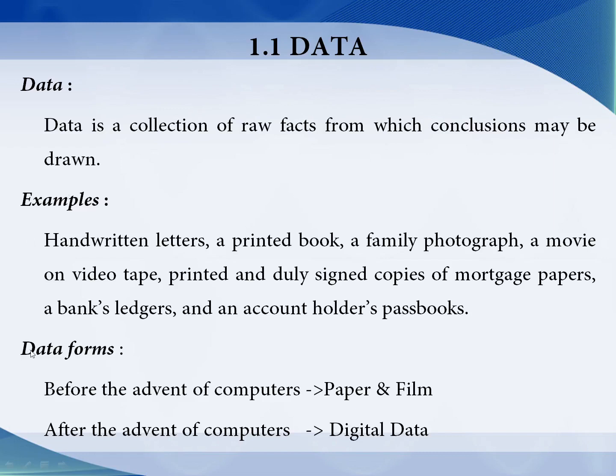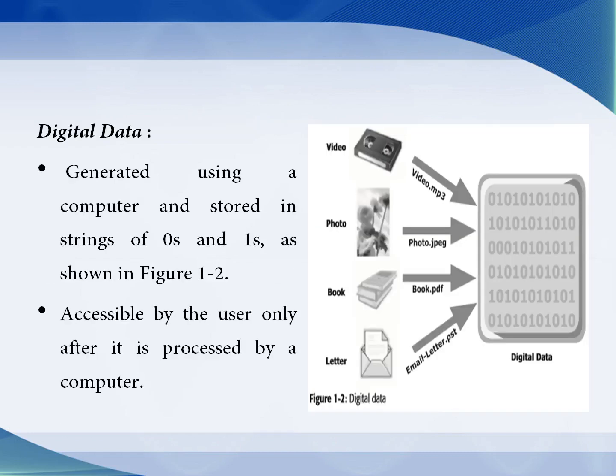Before the advent of computers, data was represented in the form of paper and film. But after the advent of computers, data is converted into the most convenient form — that is digital data. Digital data must be generated by using a computer and it is stored in the form of zeros and ones. So digital data is nothing but the data that is stored in our computers.